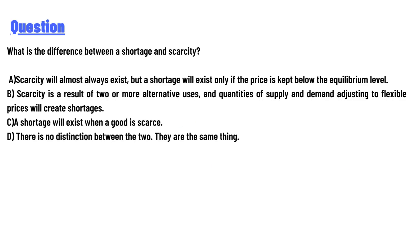Option A: A scarcity will almost always exist, but a shortage will exist only if the price is kept below the equilibrium level. Option B: Scarcity is the result of two or more alternative uses and quantitative supply and demand adjusting to flexible prices will create shortages.